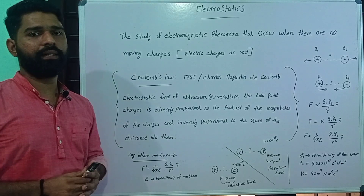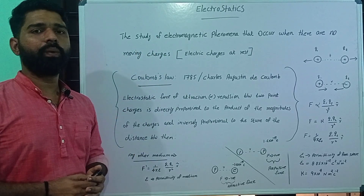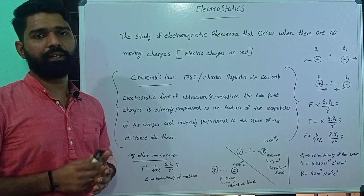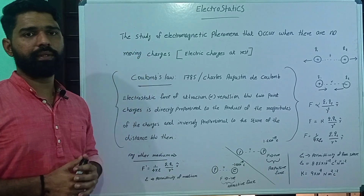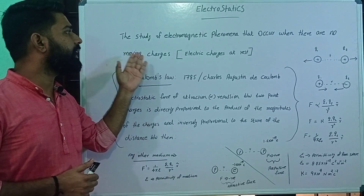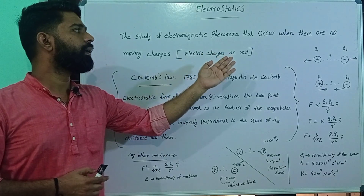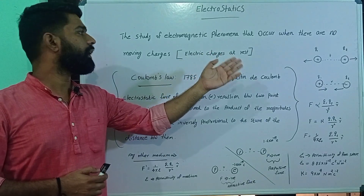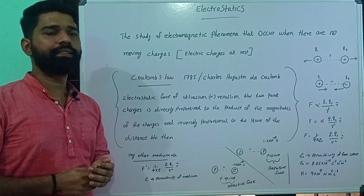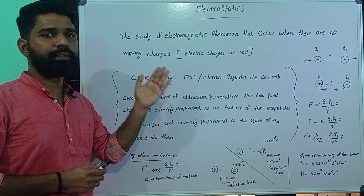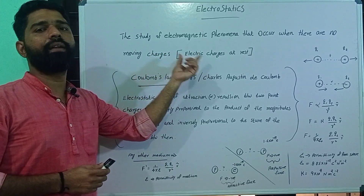That is the positive portion of Electrostatics. What is meant by Electrostatics? That is the definition of electromagnetic phenomena that occurs when there are no moving charges. That means the electric charges are at rest.